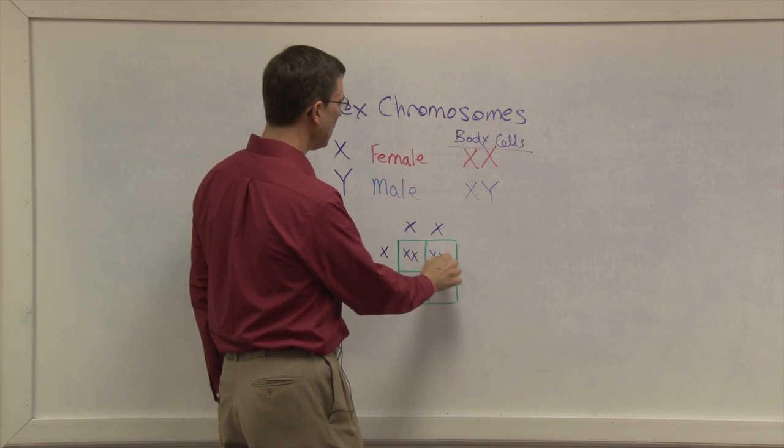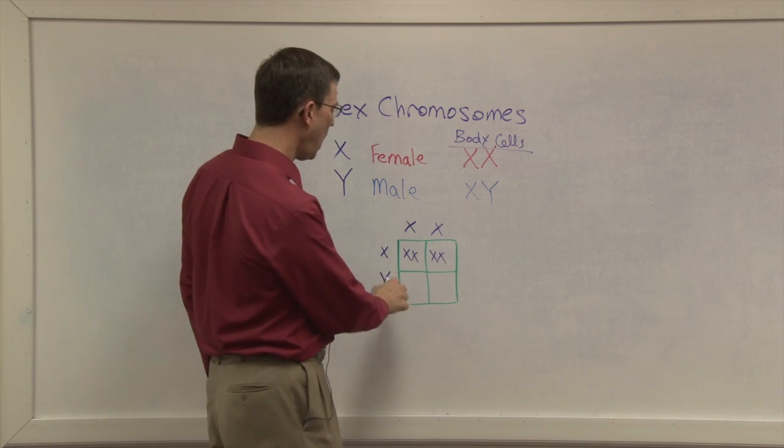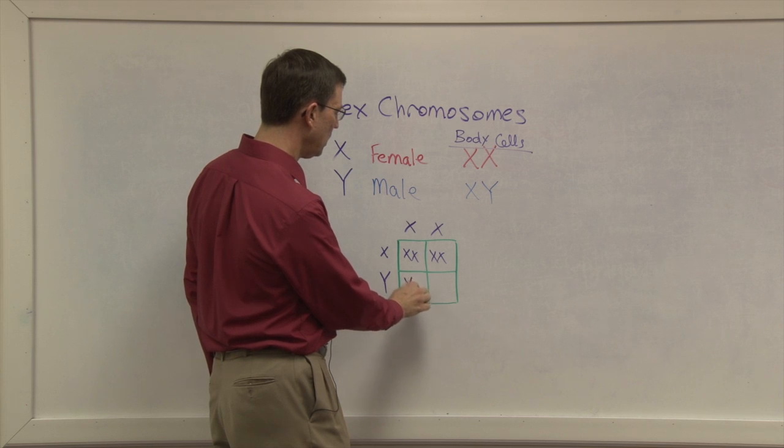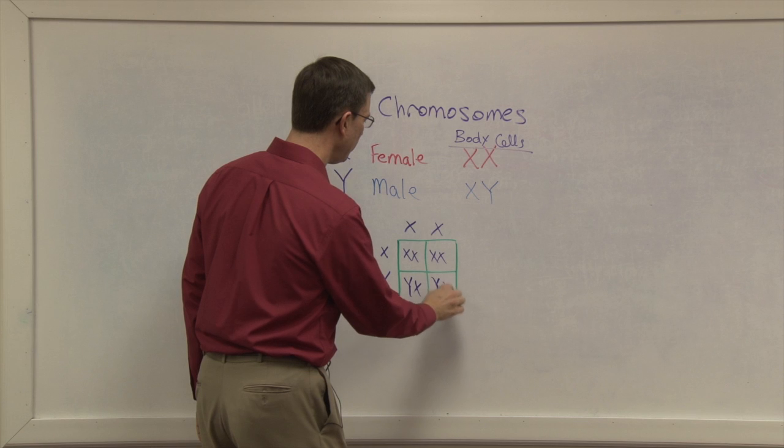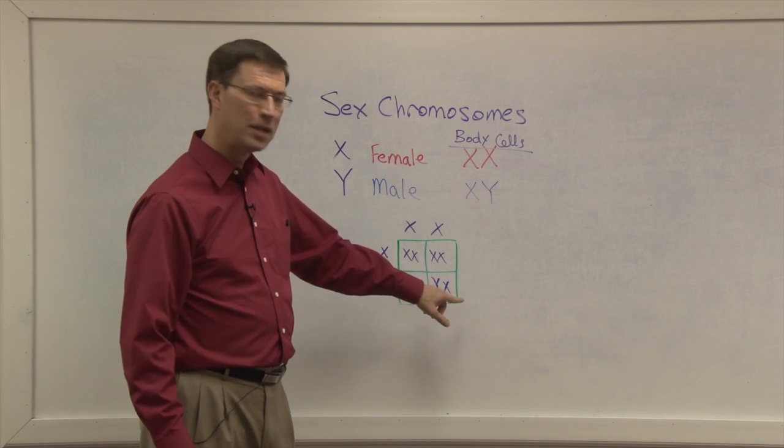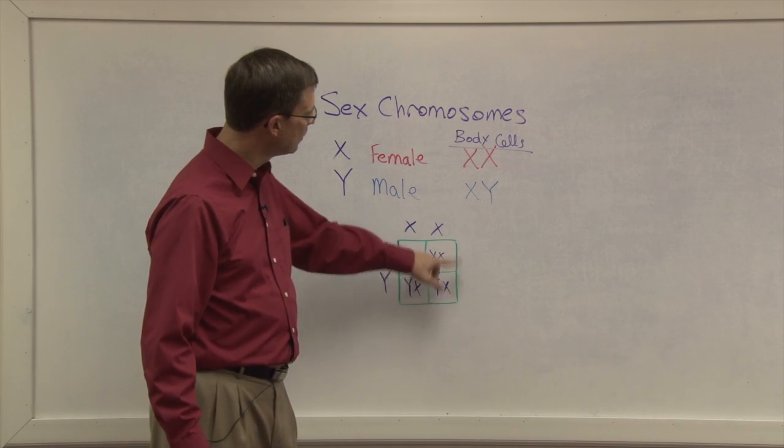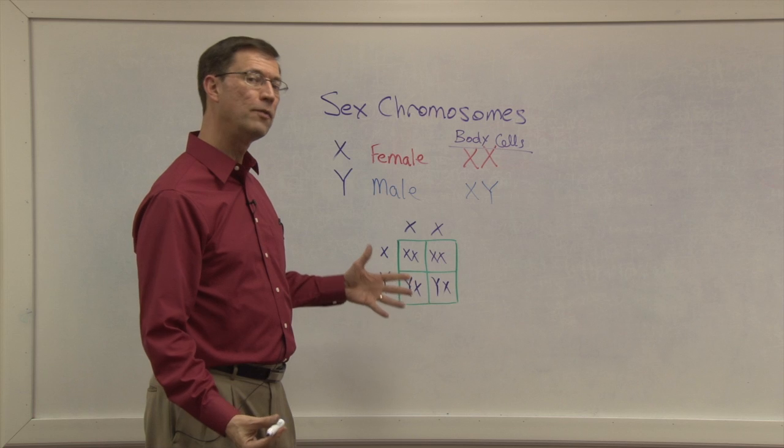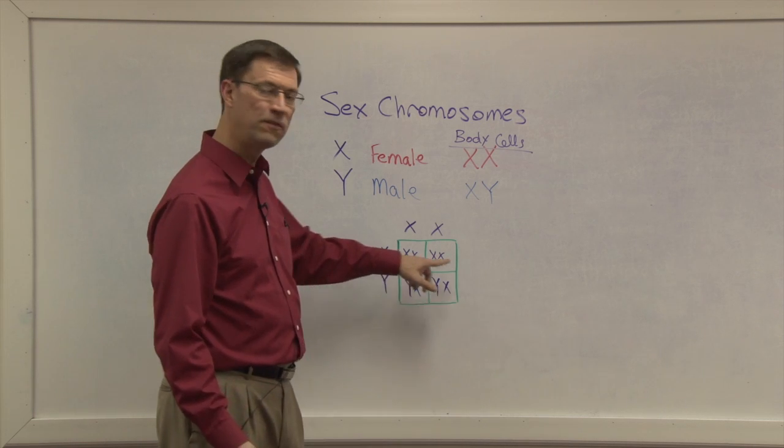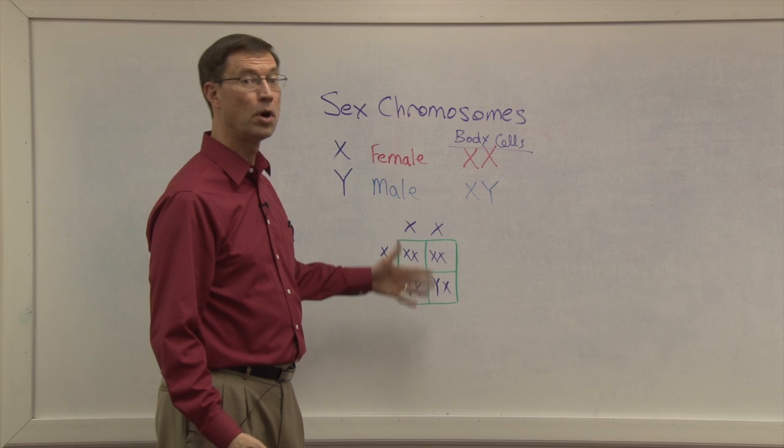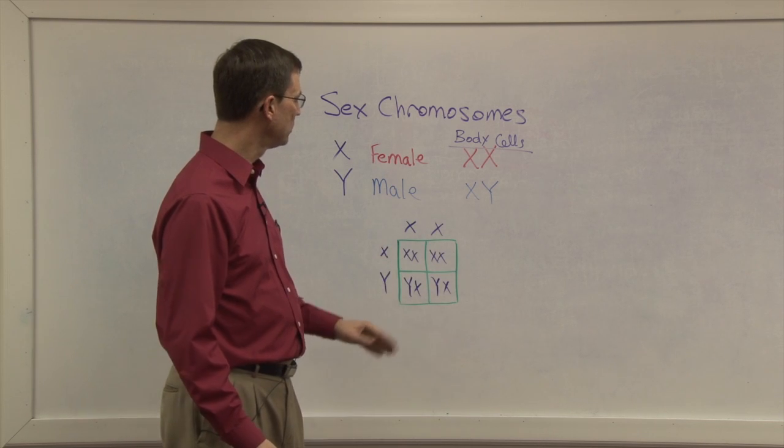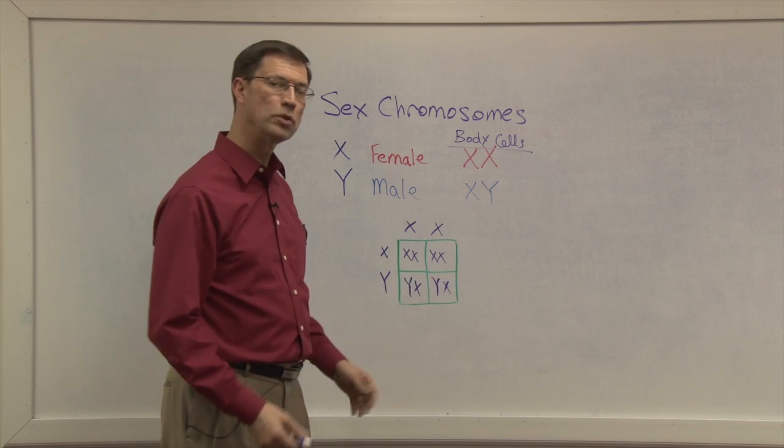Here's another one, XX. But if a Y sperm fertilizes with an X ovum, we have a boy. So this is why the chance of either one happening is 50-50. Two out of the four options produced are female, the girls, and these last two choices would be boys.